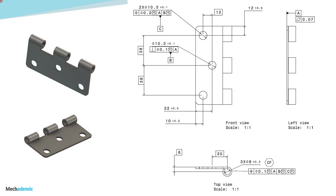Now let's look at the GD&T tolerancing scheme for this hinge bracket. We have three views — front view, left view, and top view — along with isometric views on the left. The primary datum feature is applied to the resting face, which is the large surface area on which the whole bracket rests on the panel and is bolted. This resting face is datum feature A, and a flatness control of 0.07 has been applied to it.